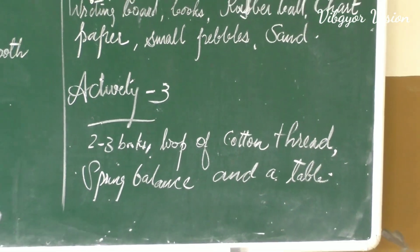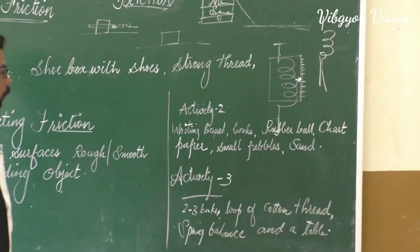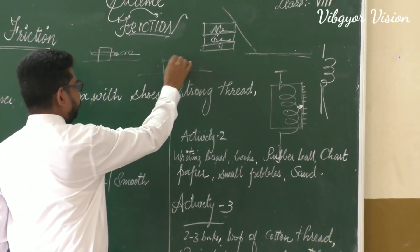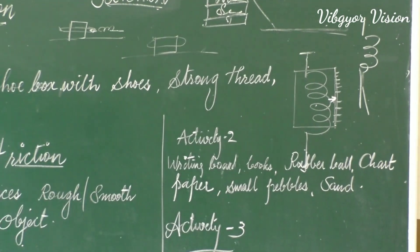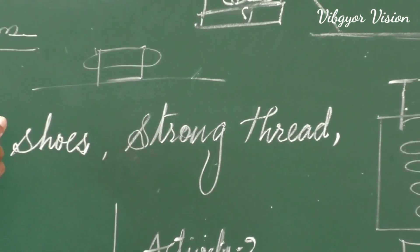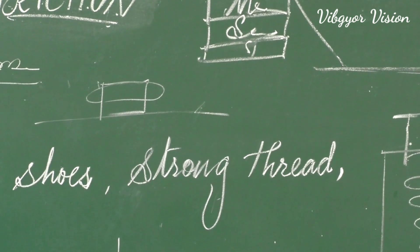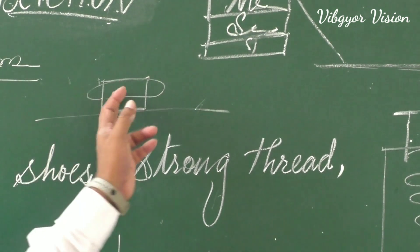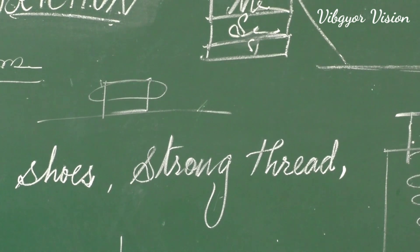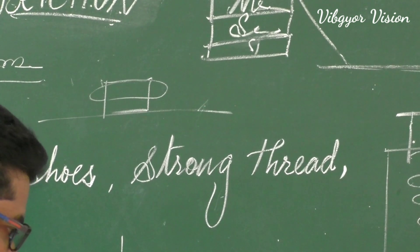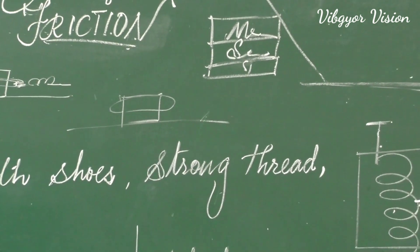Let us see how we can arrange it. First, on the table, we take one book. As we done earlier, we can tie it with the help of threads. We make a loop over the book and connect that loop to the hook of the spring balance. Everything is set up on the table.